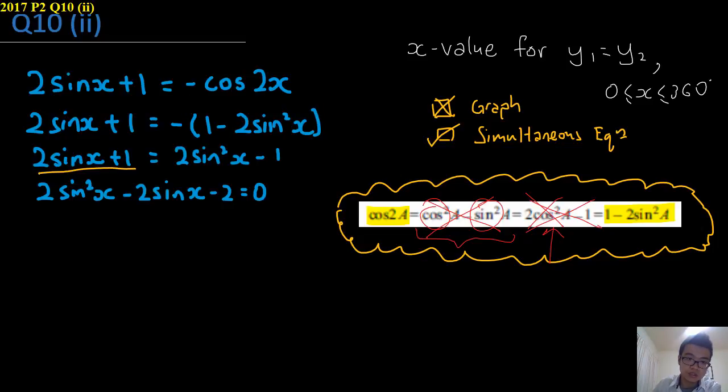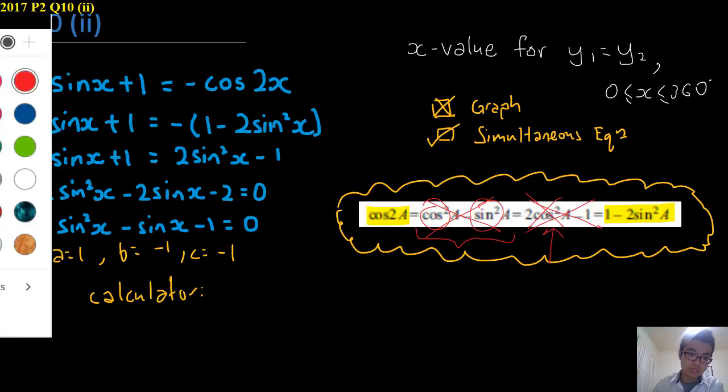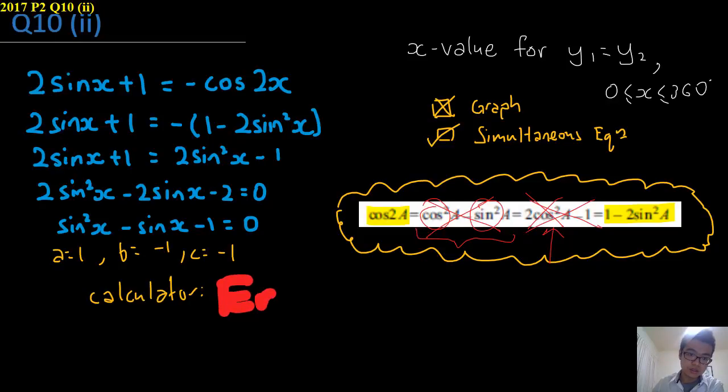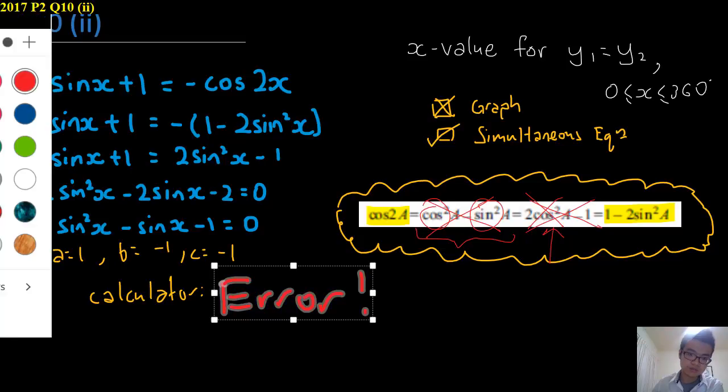So push this to the other side. So we can get this, minus n, minus 2. So realize 2, negative 2, and negative 2, it can simplify. So here, a equals to 1, b equals to negative 1, c equals to negative 1, and calculator will show some kind of error. There, error. And this is when you use your quadratic formula.